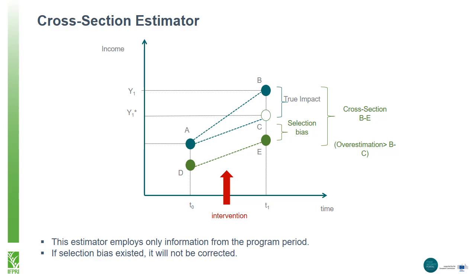If we represent selection bias on the graphic we saw earlier, the area of income between point C and point E is due to selection bias — the group we selected is not of average interest or ability. If we just took a cross section of the same group, we would be overestimating the impact if we assumed the area between point B and point E was the impact, rather than the area between B and point C. In every impact evaluation, it is important to consider and try to control for selection bias.